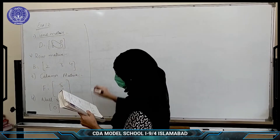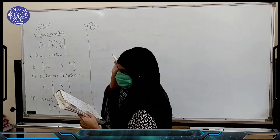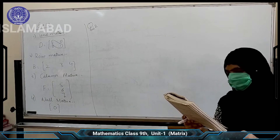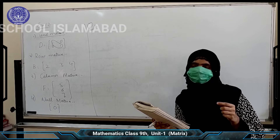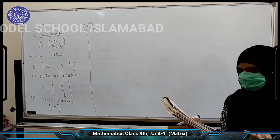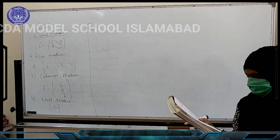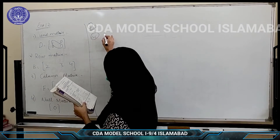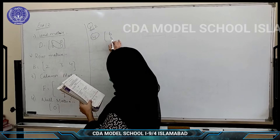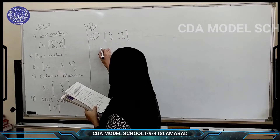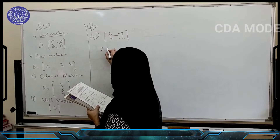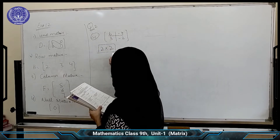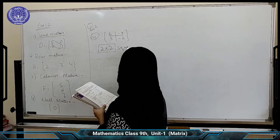Now question number 2. From the following matrices, identify square matrix. Square matrices are those whose number of rows equals number of columns. Here matrix 3: 6, 3, minus 4, minus 2 — the number of rows is 2 and the number of columns is also 2. Since number of rows and number of columns are the same, it is a square matrix.